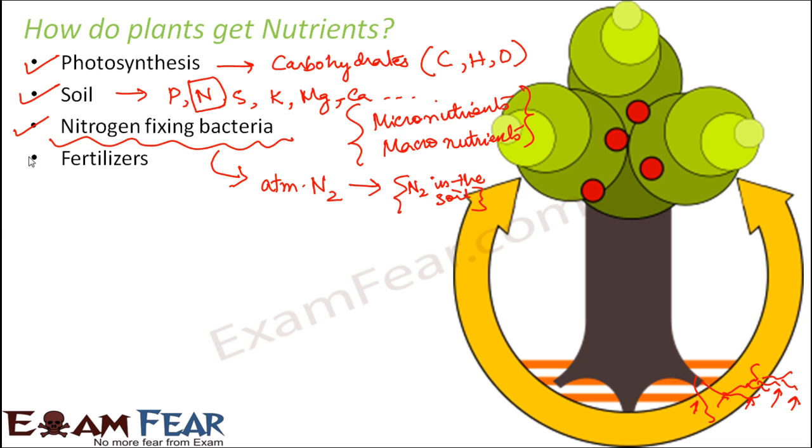The fourth source is fertilizers. These fertilizers are chemical substances which enrich the soil with a lot of nutrients. Just now I was talking about improving the quality of plants. Whenever you have to improve the quality of plants, you would have seen that farmers or gardeners tend to apply fertilizer to the soil.